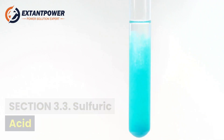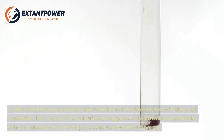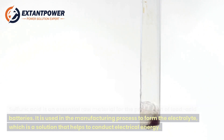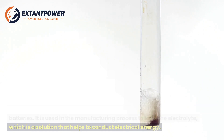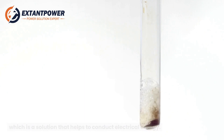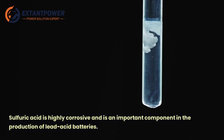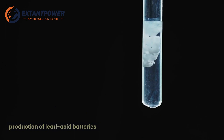Sulfuric acid is an essential raw material for the production of lead-acid batteries. It is used in the manufacturing process to form the electrolyte, which is a solution that helps to conduct electrical energy. Sulfuric acid is highly corrosive and is an important component in the production of lead-acid batteries.